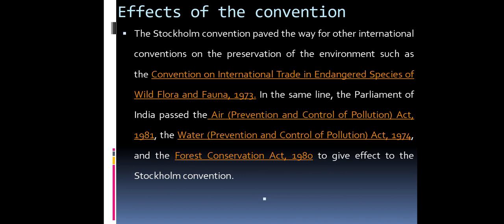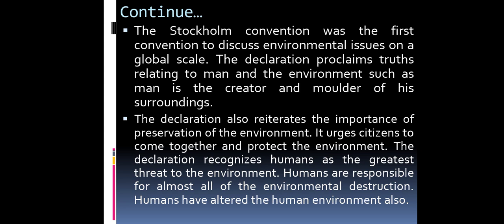Effects of the Convention. The Stockholm Convention paved the way for other international conventions on the preservation of the environment, such as the Convention on International Trade in Endangered Species of Wild Flora and Fauna, 1973. In the same line, the Parliament of India passed the Air Prevention and Control of Pollution Act, 1981; the Water Prevention and Control of Pollution Act, 1974; and the Forest Conservation Act, 1980, to give effect to the Stockholm Convention. The Stockholm Convention was the first convention to discuss environmental issues on a global scale. The Declaration proclaims truths relating to man and the environment, such as that man is the creator and molder of his surroundings, and reiterates the importance of preservation of the environment.